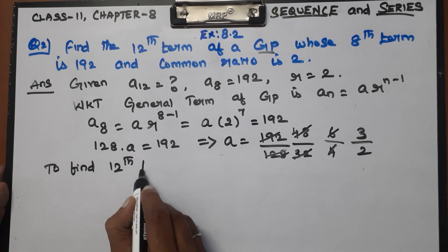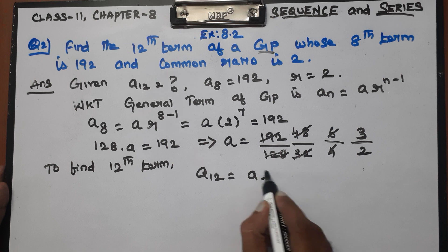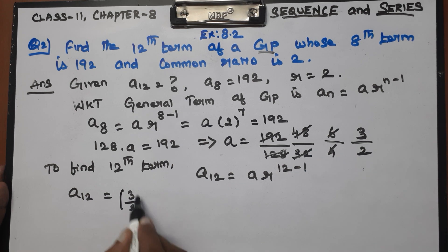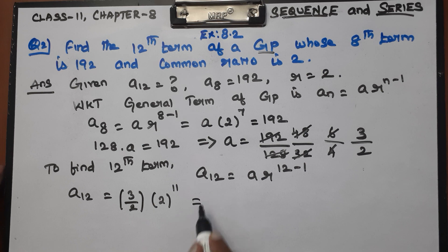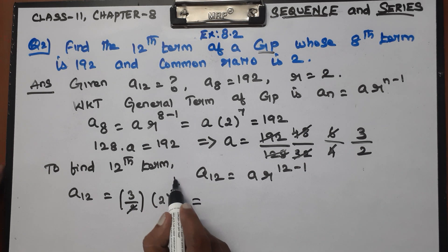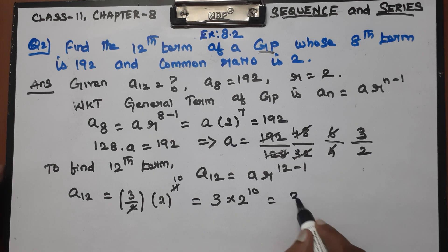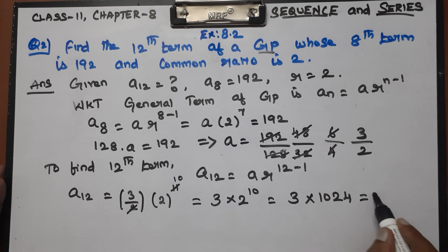Now we have to find the 12th term. The formula is A12 = A · r^(12−1). So A12 = (3/2) with r = 2, giving us 3 × 2^(12−1−1) = 3 × 2^10. Since 2^10 = 1024, A12 = 3 × 1024 = 3072. So the 12th term is 3072.